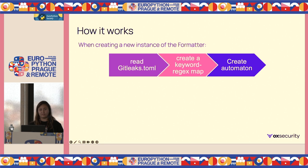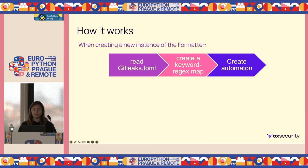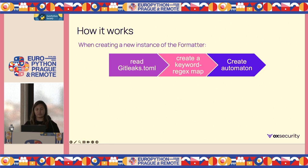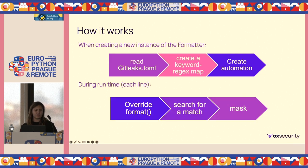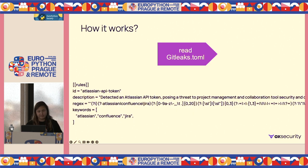This tool is based on the Gitleaks tool. We take the Gitleaks config file and parse it, then create a map — a dictionary matching keywords to regexes. We create an automaton with all the keywords we found. During runtime, the formatter's format function is overridden: we search for a match in the line we receive and mask it.